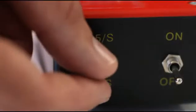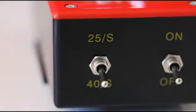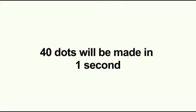Switch the ticker timer to 40 Hz if it is not already set to this frequency. This means that 40 dots will be made in one second.